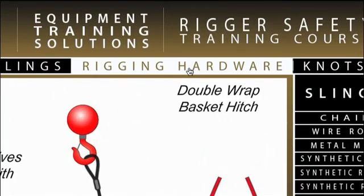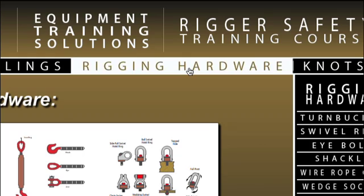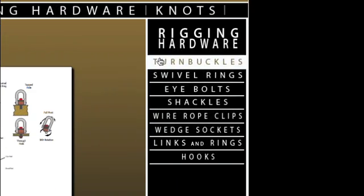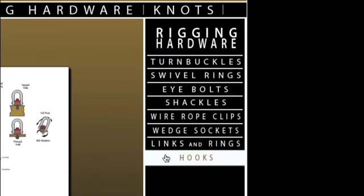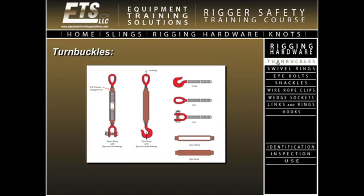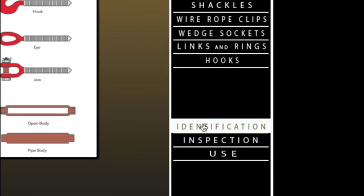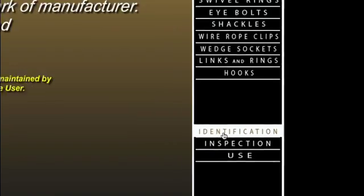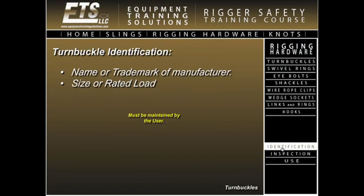The rigging hardware button. By left clicking on the rigging hardware button, you will be directed to the rigging hardware section of our program. You will notice on the right side of your screen a list of eight buttons. These buttons represent the different types of rigging hardware used in the construction industry. By left clicking on one of these buttons, you will be directed to the coinciding section of that button. You will notice another set of three buttons: the identification button, the inspection button, and the use button. By left clicking on the identification button, you will be given the information the manufacturer must place on the corresponding rigging hardware.